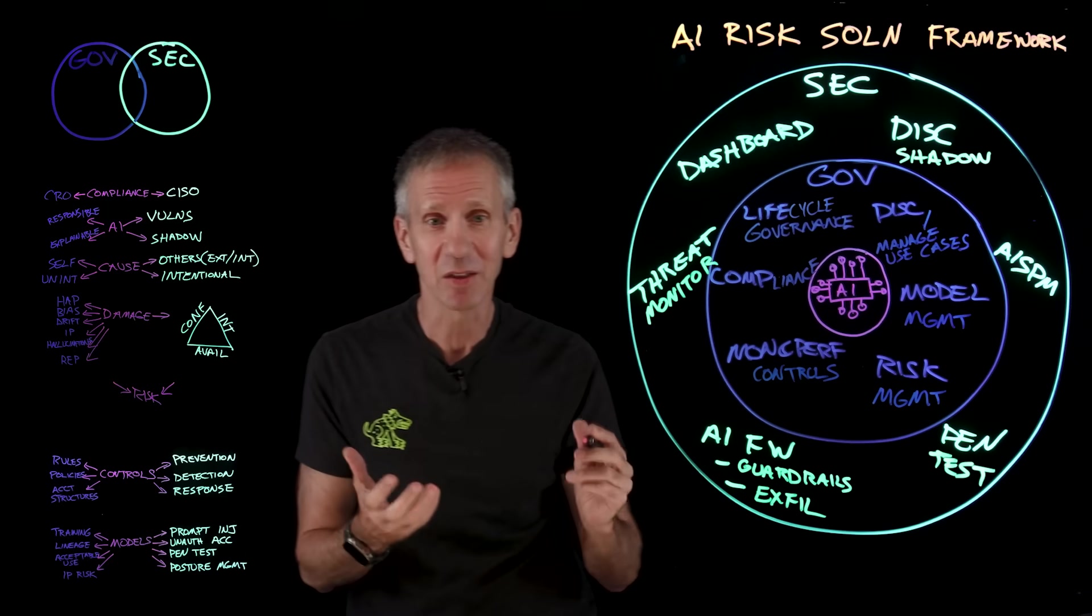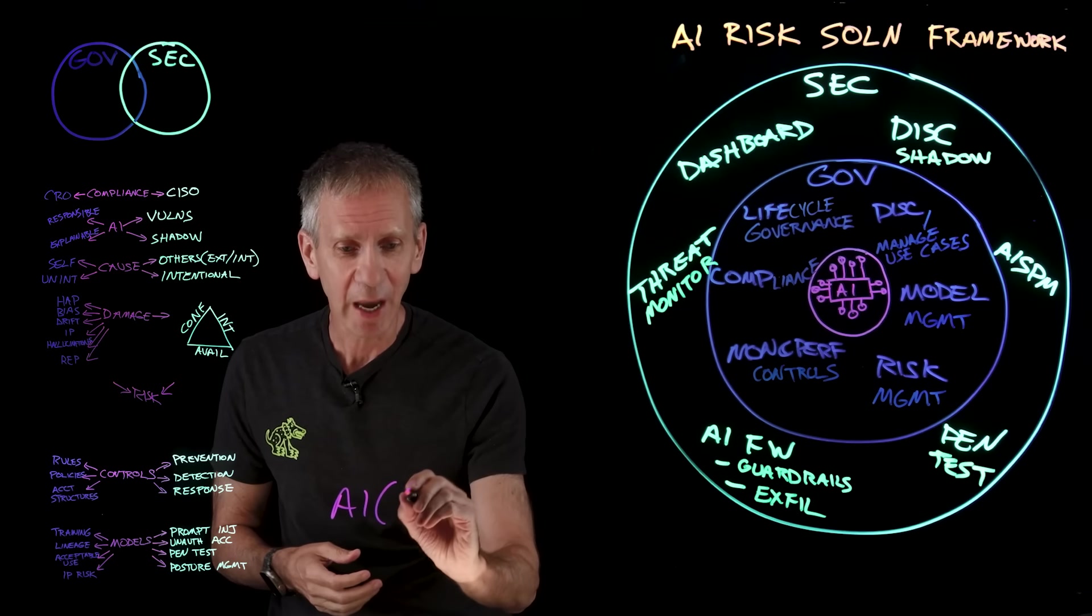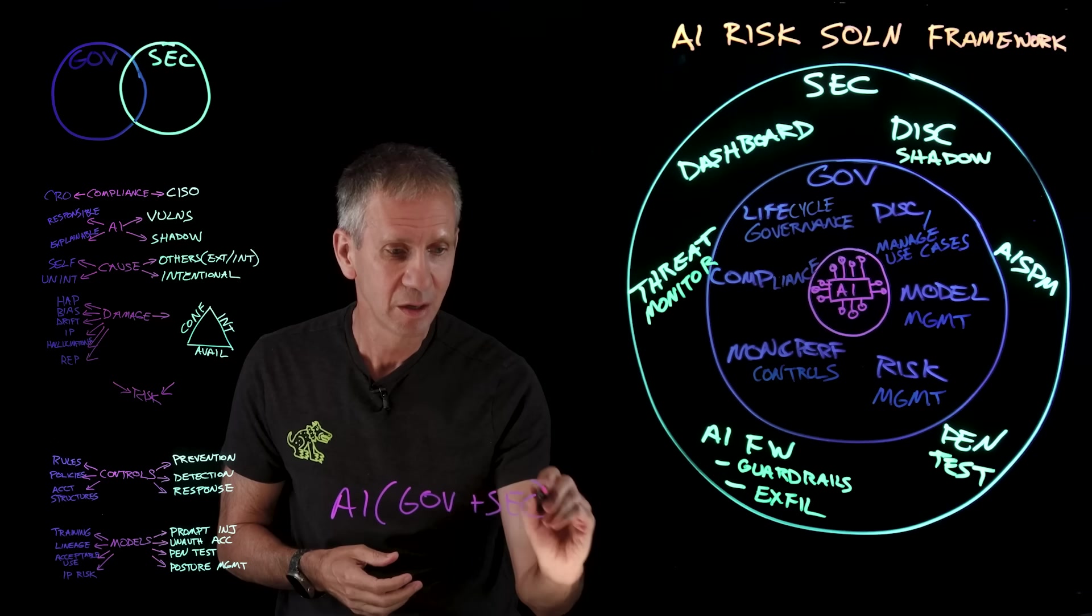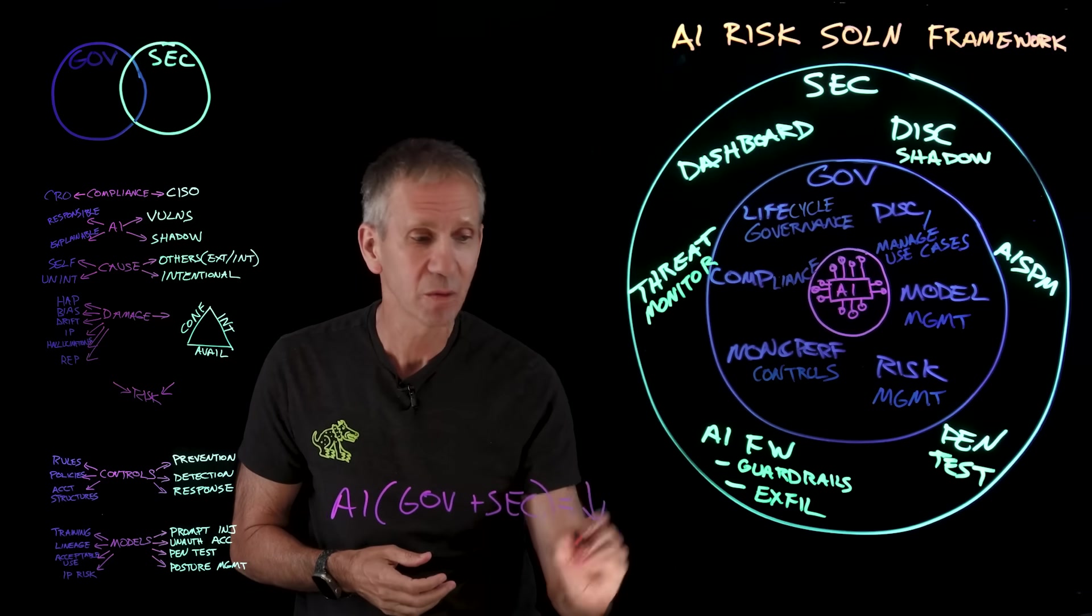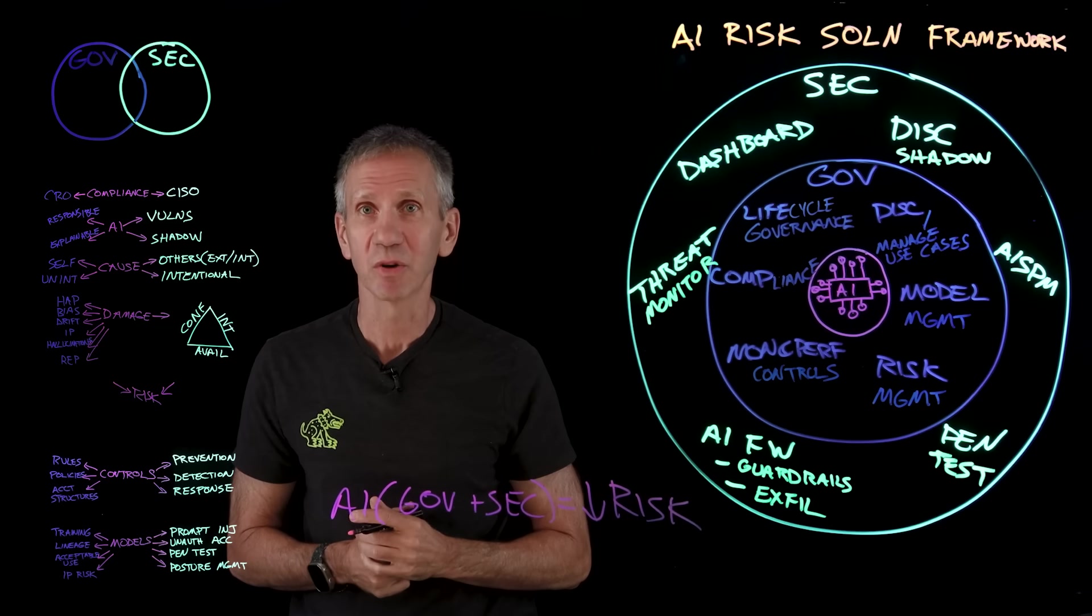If you put all of these things together, you have what is really a much stronger solution. So the way to think about this is if we have AI and we add to it governance plus security, then if we do it right, we lower risk. And that's ultimately what we're trying to do.